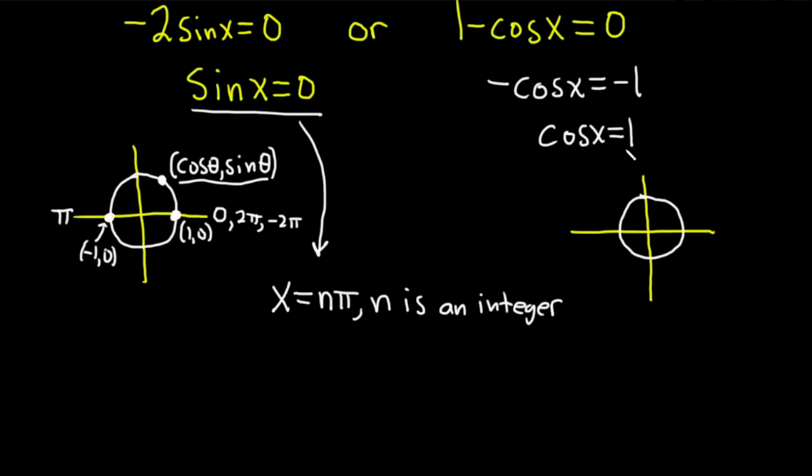So when is the x-coordinate equal to 1? Well, right here. This is the only time. This is the point 1 comma 0. This angle is 0. This angle is also 2 pi. But it's also negative 2 pi. But it's also 4 pi. Etc. So it's any even multiple of pi.